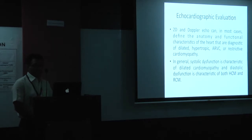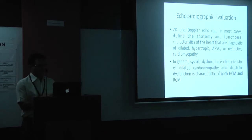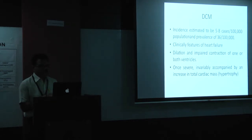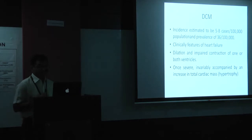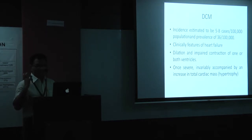In echocardiographic evaluation, systolic dysfunction is characteristic of dilated cardiomyopathy, while diastolic dysfunction is characteristic of both hypertrophic and restrictive cardiomyopathy. Dilated cardiomyopathy has an incidence of five to eight cases per 100,000 and prevalence of 36. The classic clinical feature is dilation and impaired contraction of one or both ventricles.